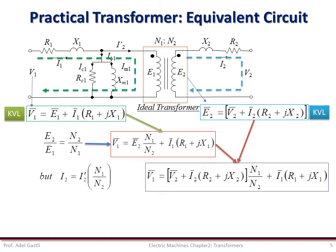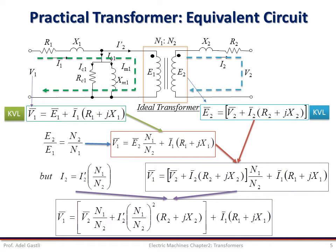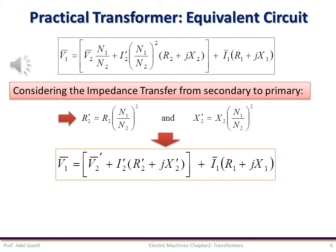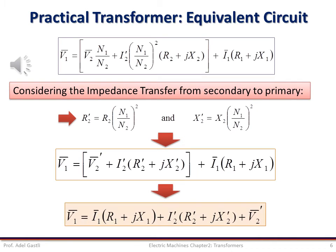Knowing that I2 is equal to I'2 multiplied by the turns ratio N1 over N2, we can rewrite the previous equation accordingly. Using this equation and considering the impedance transfer from secondary to the primary side, which we have seen in the previous part, this leads to R'2 equal to R2 multiplied by the square of N1 over N2, and X'2 equals X2 multiplied by the square of N1 over N2. Then we can obtain and further rearrange an important equation which will help us develop the transformer equivalent circuit further.